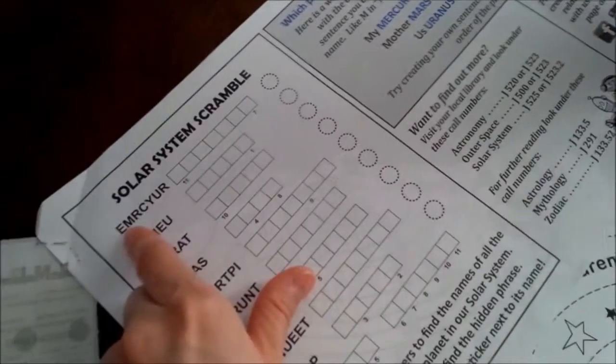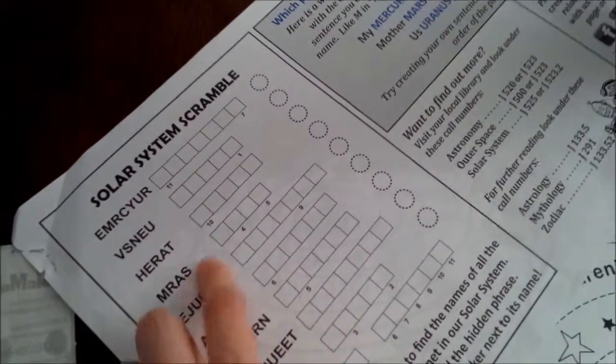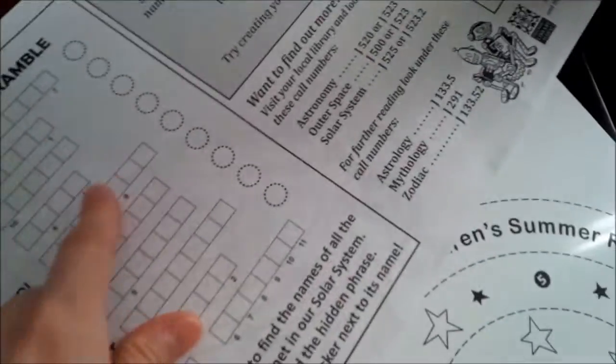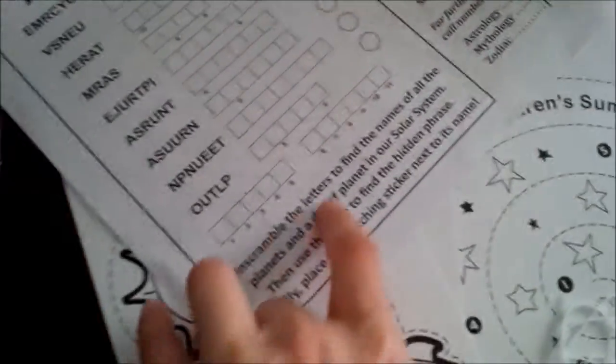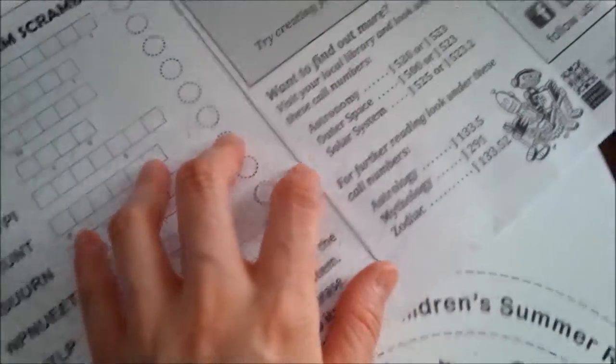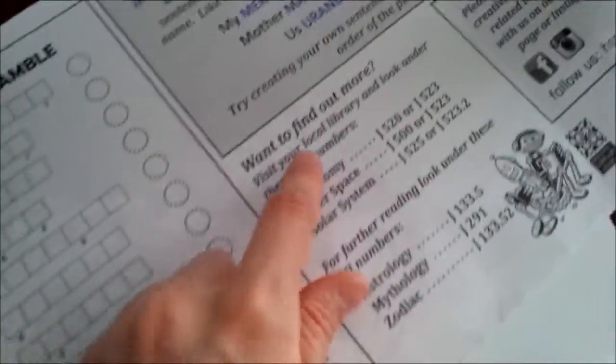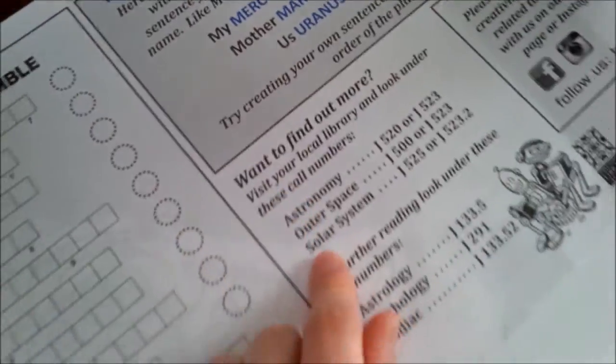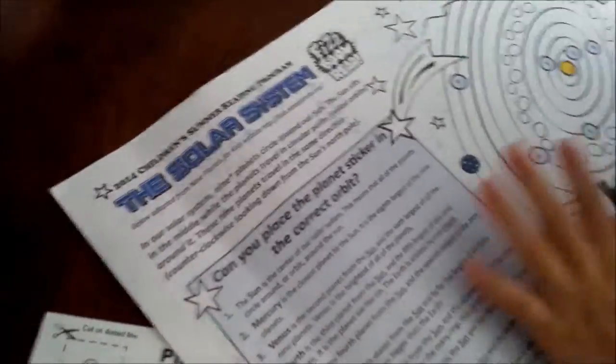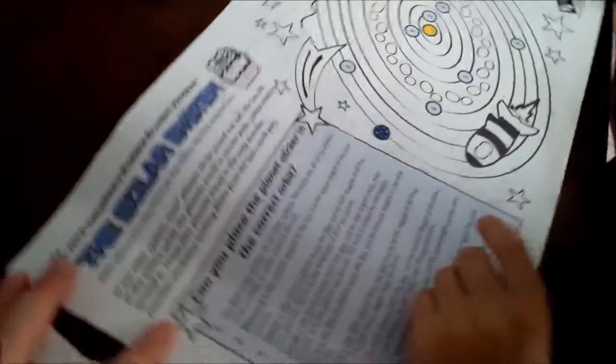It has an M and E and R and C, Y, U, R. If you want to find out more, I think there's some information here. What does that say? Can you read this one?